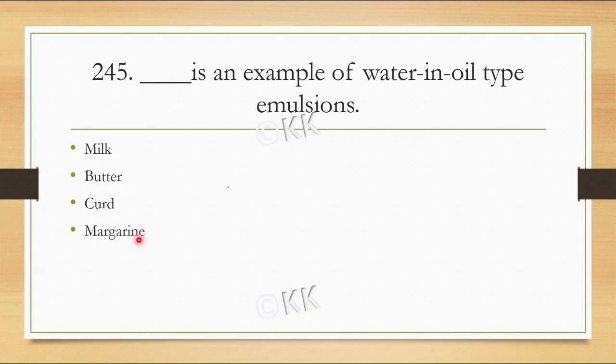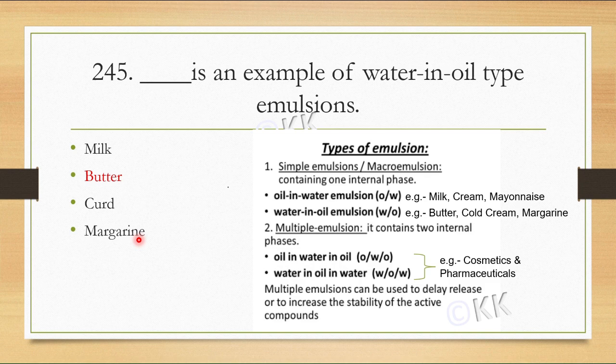In this slide I have types of emulsions. Simple emulsions include oil-in-water or water-in-oil types. Oil-in-water emulsions include milk, cream, and mayonnaise. Water-in-oil emulsions include butter, margarine, and cold cream. Multiple emulsions are generally not in dietetics but are used in cosmetics and pharmaceuticals.